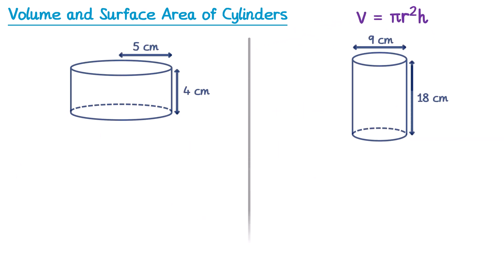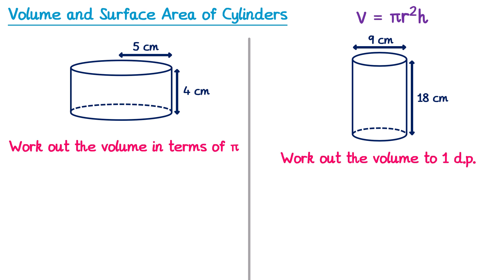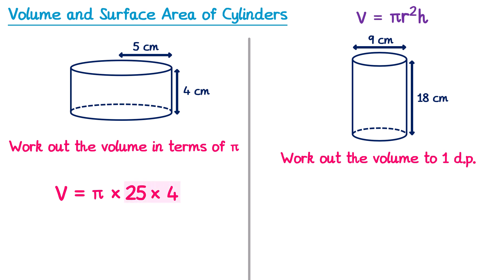Here are two cylinders for you to have a go at. Feel free to pause the video and then check your answers afterwards. For the first cylinder we do volume equals π multiplied by the radius squared — and we can see the radius for this one is 5, so multiplied by 5 squared — and then multiplied by the height which is 4. This one says to give it in terms of pi, so we work out 5 squared which is 25, and then multiply the 25 and the 4 to get 100. So it's π times 100, or 100π centimeters cubed.